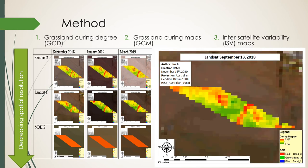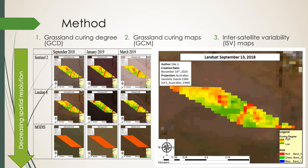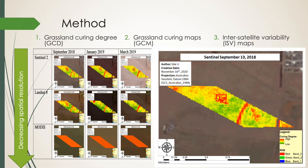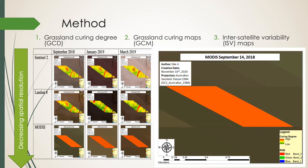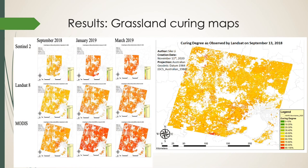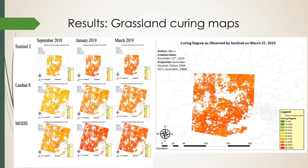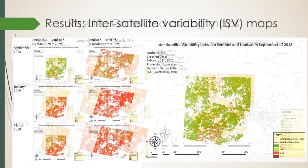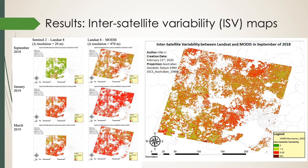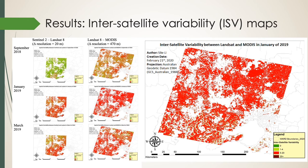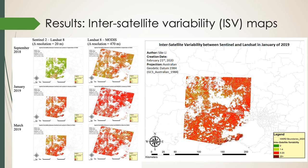The higher the ISV, the larger the difference in GCD. Figures below show how curing degree varies as calculated by different satellites. These are the grassland curing maps — the higher the curing, the redder the color. And these are the inter-satellite variability maps: green indicates low ISV, and red indicates high ISV.